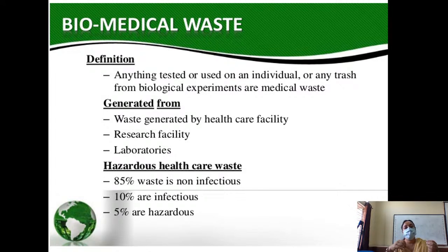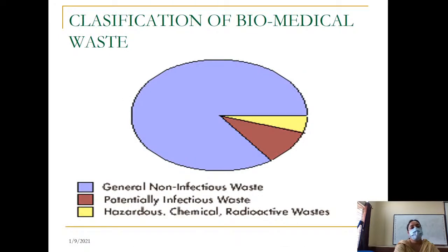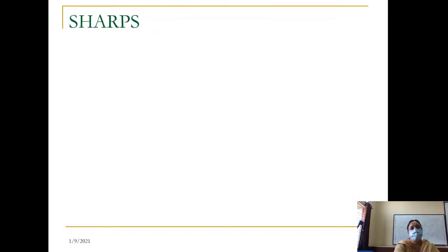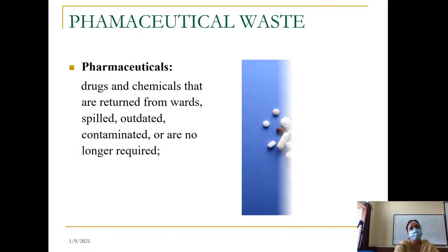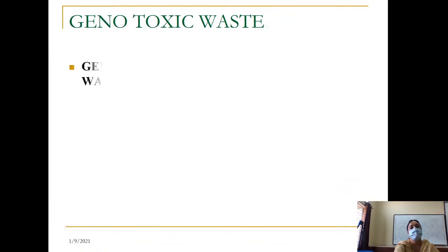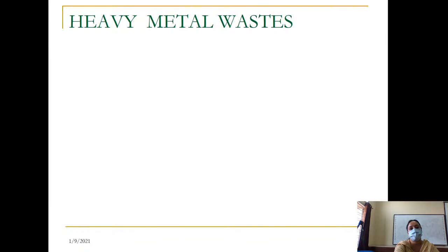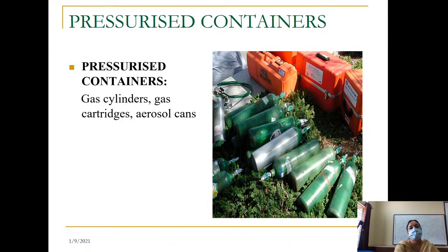The whole 85 percent non-infectious waste becomes infectious because of indiscriminate dumping and no proper segregation. Once a cotton swab soaked in blood is thrown with food stuff, the entire thing becomes hazardous waste. That is why proper segregation at the source of generation is very important. In the classification of biomedical waste: 85 percent is general, 10 percent is potentially infectious, and about 5 percent is hazardous chemical or radioactive waste.